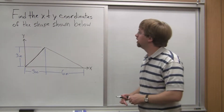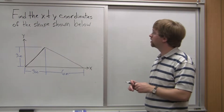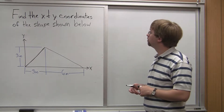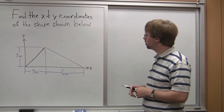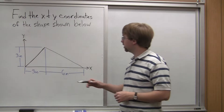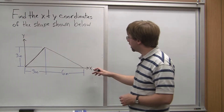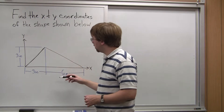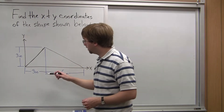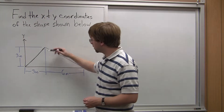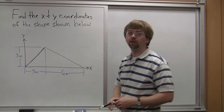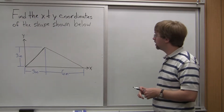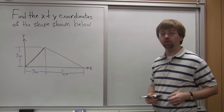Hello everyone. For this video we are asked to find the x and y coordinates of the centroid of the shape shown below. For this shape we've got a triangle. It's 9 inches long, 3 inches tall, and the top vertex is 3 inches in the x direction. We need to find the x and y coordinates, and for this we're going to use integration.